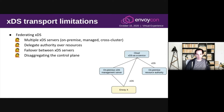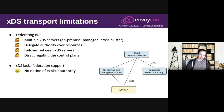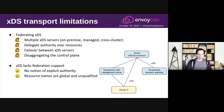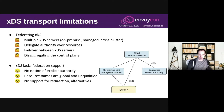Today we kind of lack some of the support. We have no explicit notion of what an authority is or what a node in this graph looks like. Resource names are opaque and uncacheable, but they're also global, and there's no way to qualify them by specific authorities or have each authority manage its own resource namespace. There's no support for redirection or failover alternatives, and our existing config sources are pretty coarse-grained.